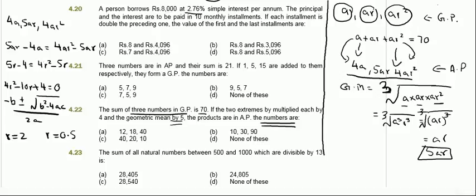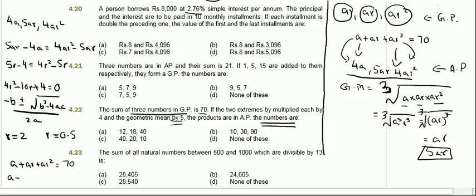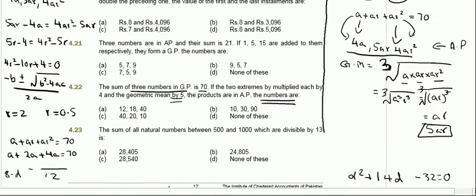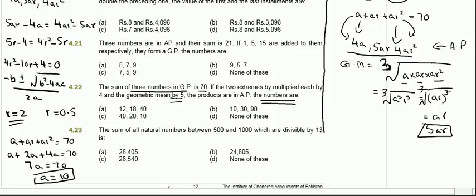If r equals 2, and a plus ar plus ar squared equals 70, it becomes a plus 2a plus 4a equals 70, so 7a equals 70 and a equals 10. The three terms are then a equals 10, ar equals 20, and ar squared equals 40.